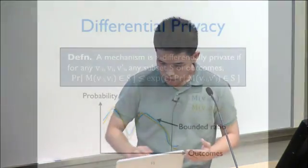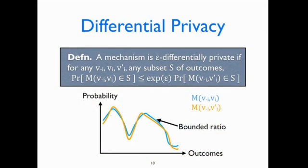We say the mechanism has good privacy if the distance between those two distributions is at most epsilon, for any fixed values of other agents and any way of lying about my true value. The notion of distance we use is the infinity divergence. We say a mechanism is epsilon-differentially private if, when I change my value from v_i to v_i', the probability that any subset of outcomes is chosen should not change by more than a multiplicative e^epsilon factor.